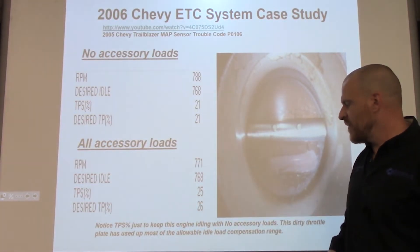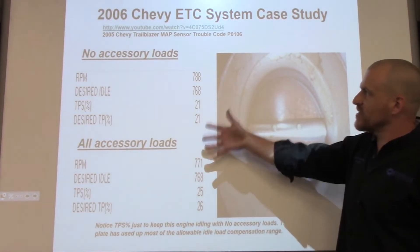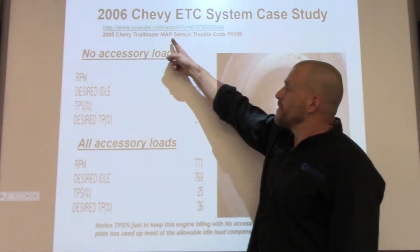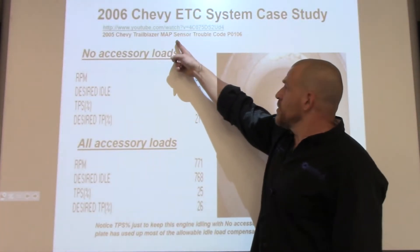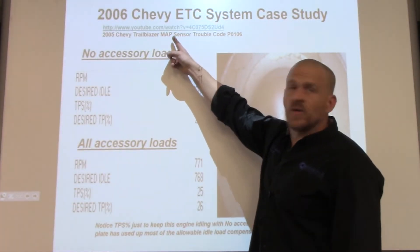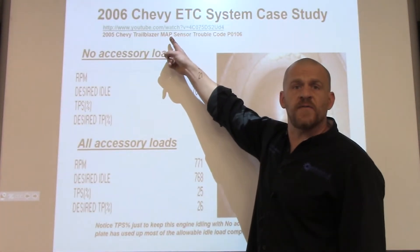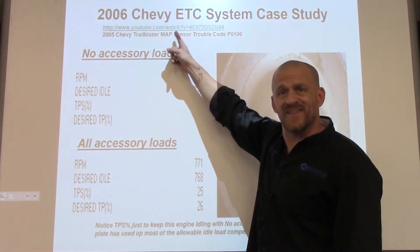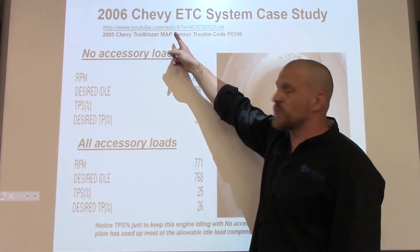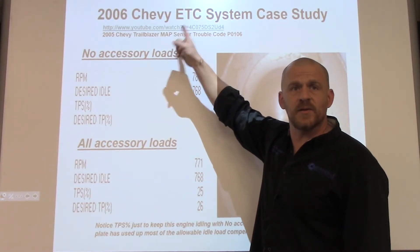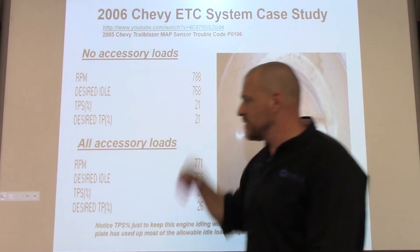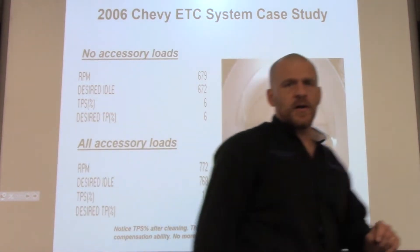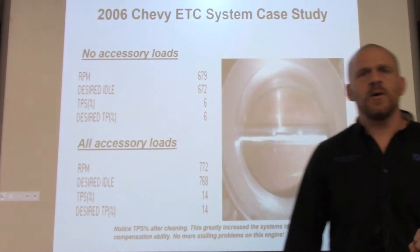This car had stalling issues. There's a nice YouTube case study on a TrailBlazer with a false MAP code right here. I highly recommend you guys watch that — click on that link and watch it. This is after cleaning the throttle body on this car.